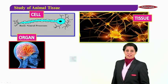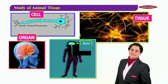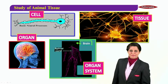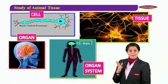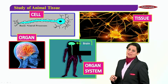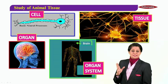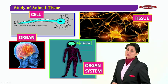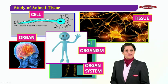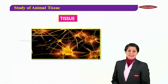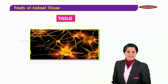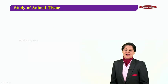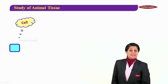Similarly, groups of tissues together form an organ, and various organs together form an organ system. Here you're seeing the nervous system. Many such systems — nervous, excretory, respiratory, and others — together make up what we call an organism.